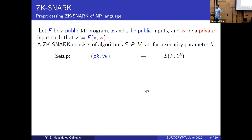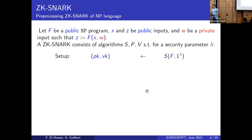Among ZK-SNARKs, we focus on pre-processing ZK-SNARKs for NP languages, where we prove that a word belongs to a non-deterministic polynomial language. We have an NP program F with public input x and private input w, such that the relation is satisfied: z equals F of x and w.